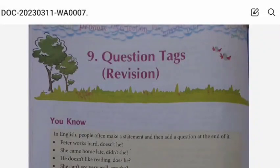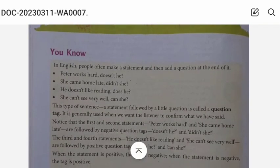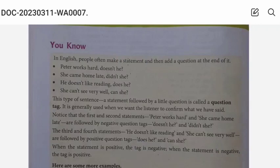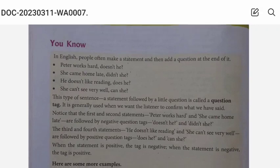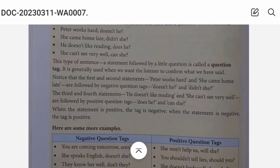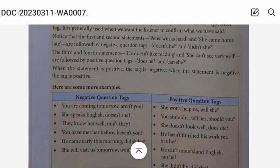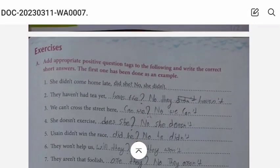Hey guys, this is MP Teaching John. Today we are going to discuss the exercise of chapter 9 — question tags — from the book 'Great Fun with Grammar' for class 8. In a question tag, for example: 'Peter works hard, doesn't he?' — the question tag is 'doesn't he.' It is a statement followed by a little question at the end, and this type of sentence is called a question tag.